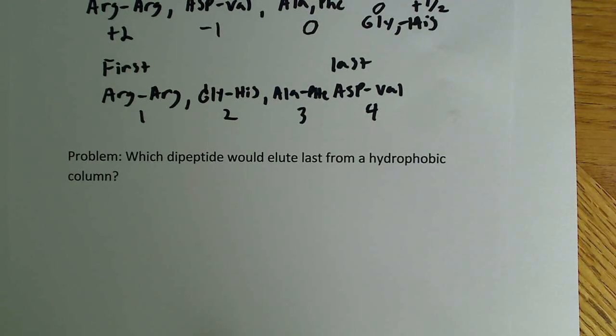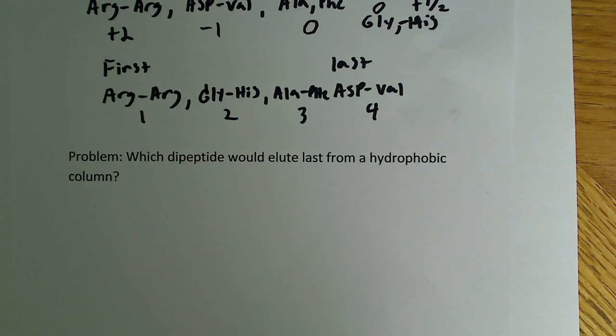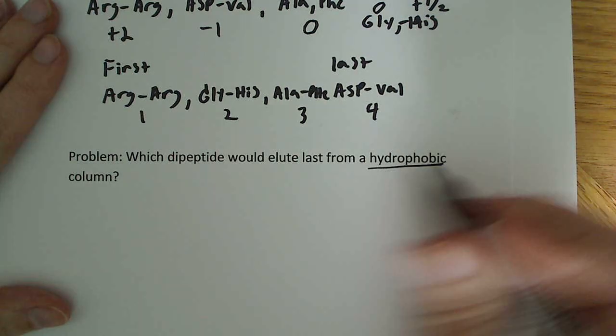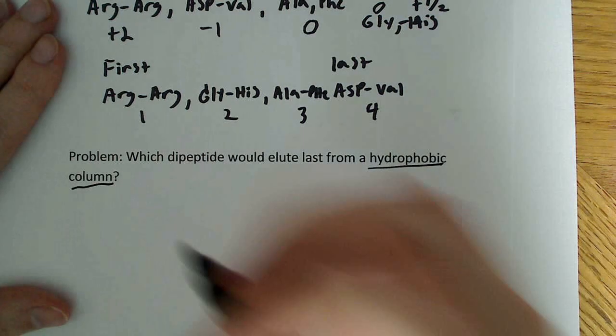This is kind of like a part 2 to this problem. It says, which dipeptide would elute last from a hydrophobic column? Remember, the more hydrophobic the dipeptide, the greater the interaction with the column. Because that's what this is saying: we have a hydrophobic column.